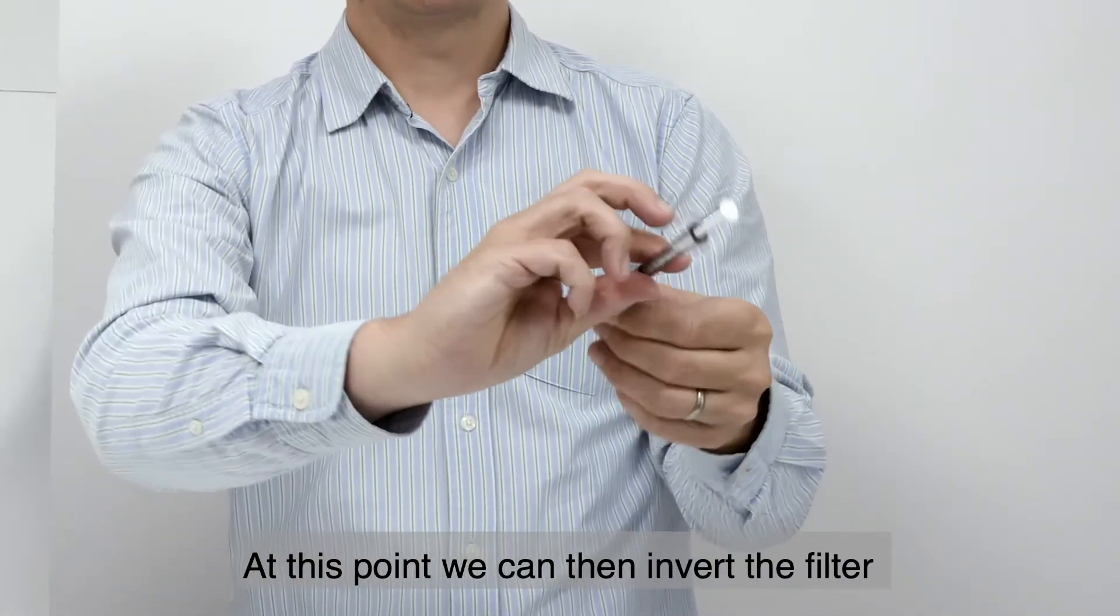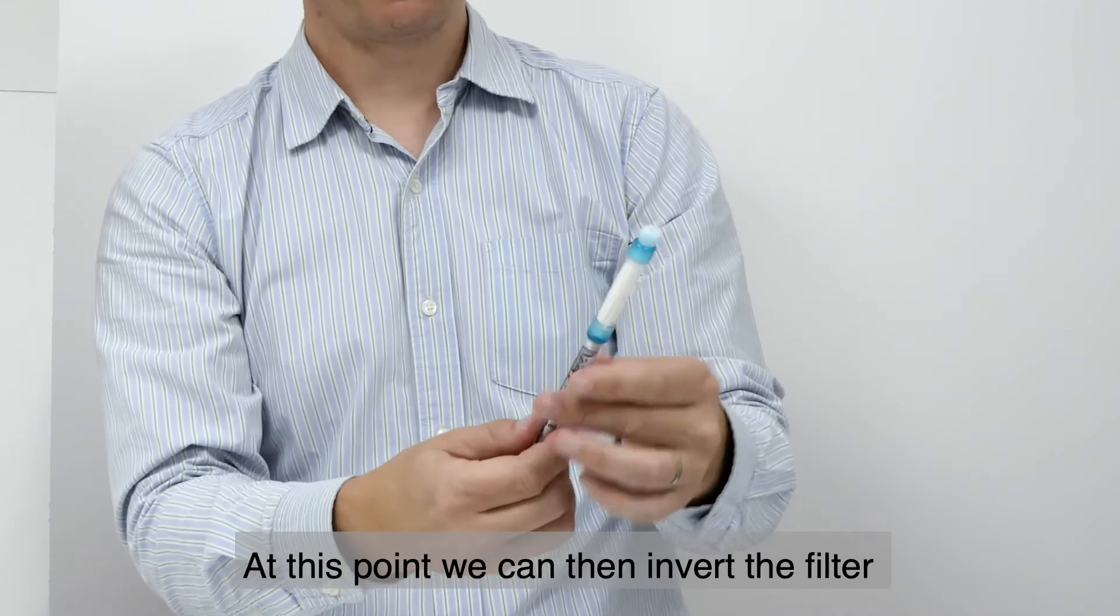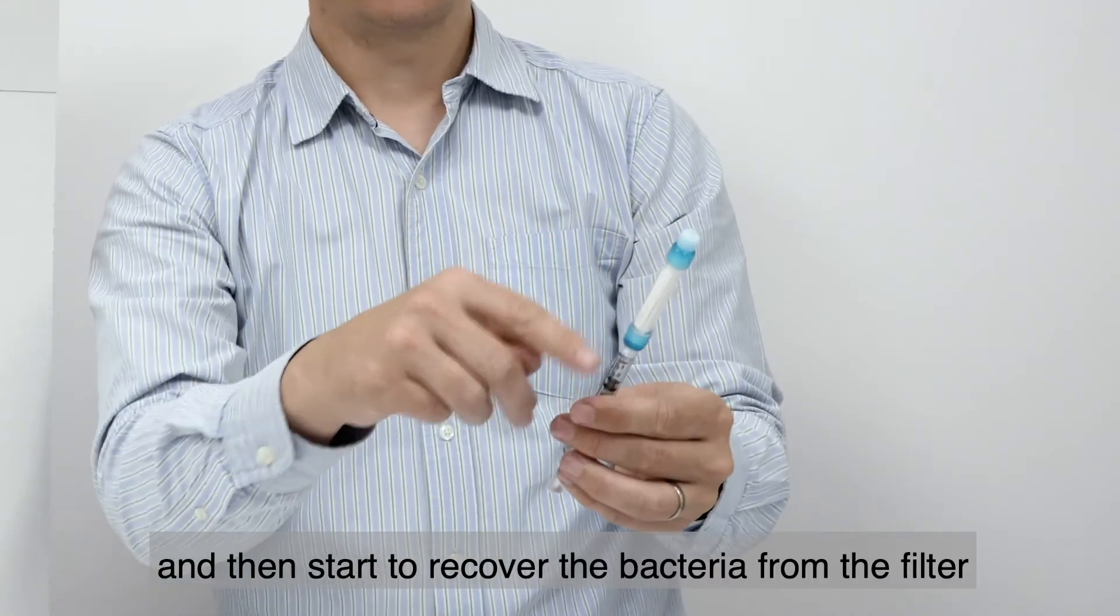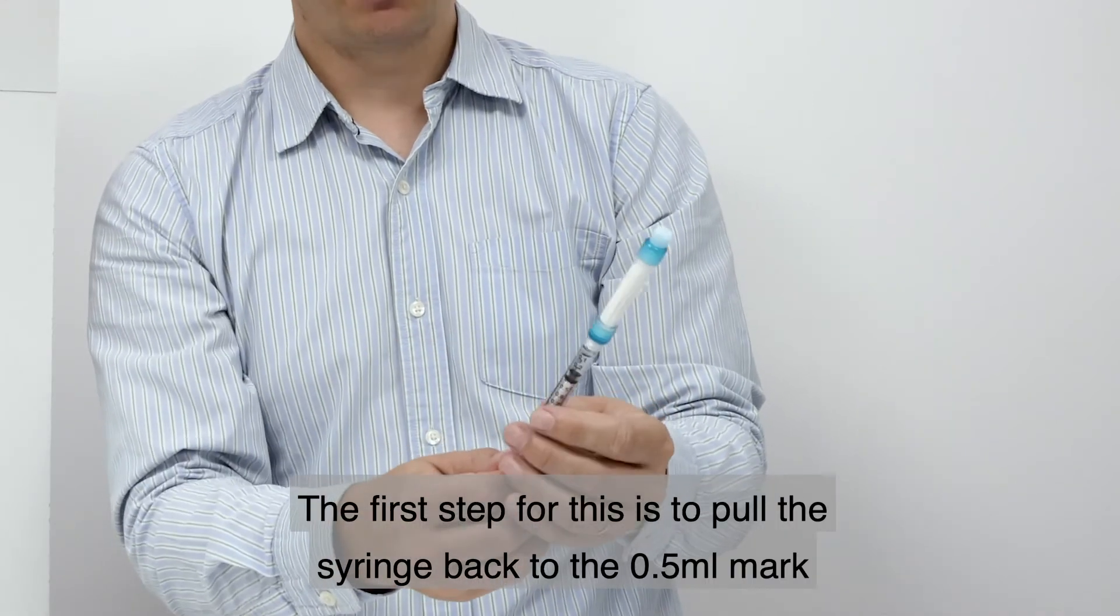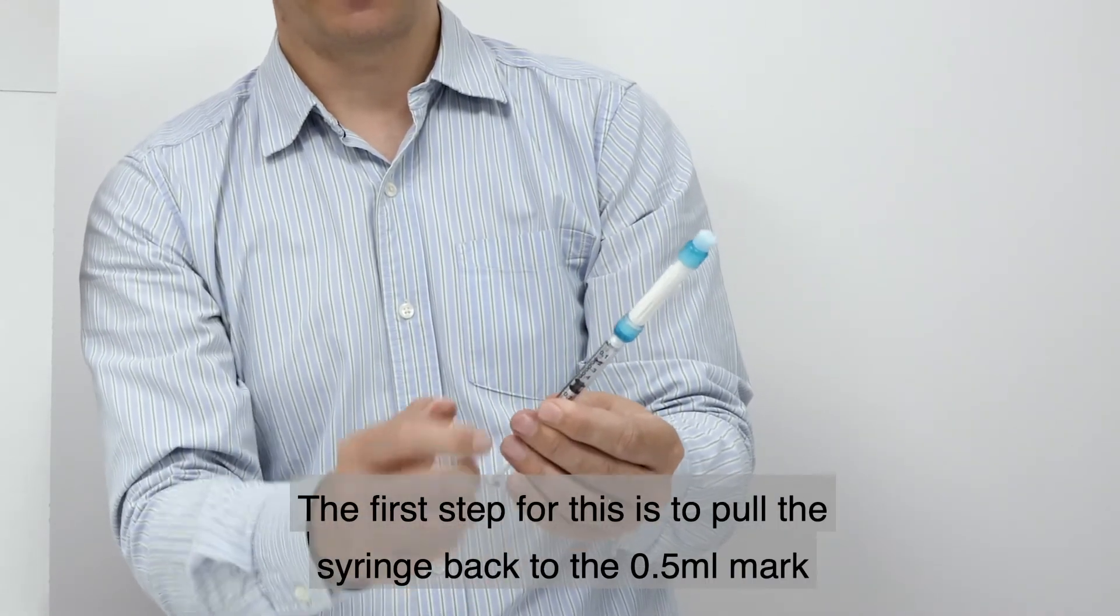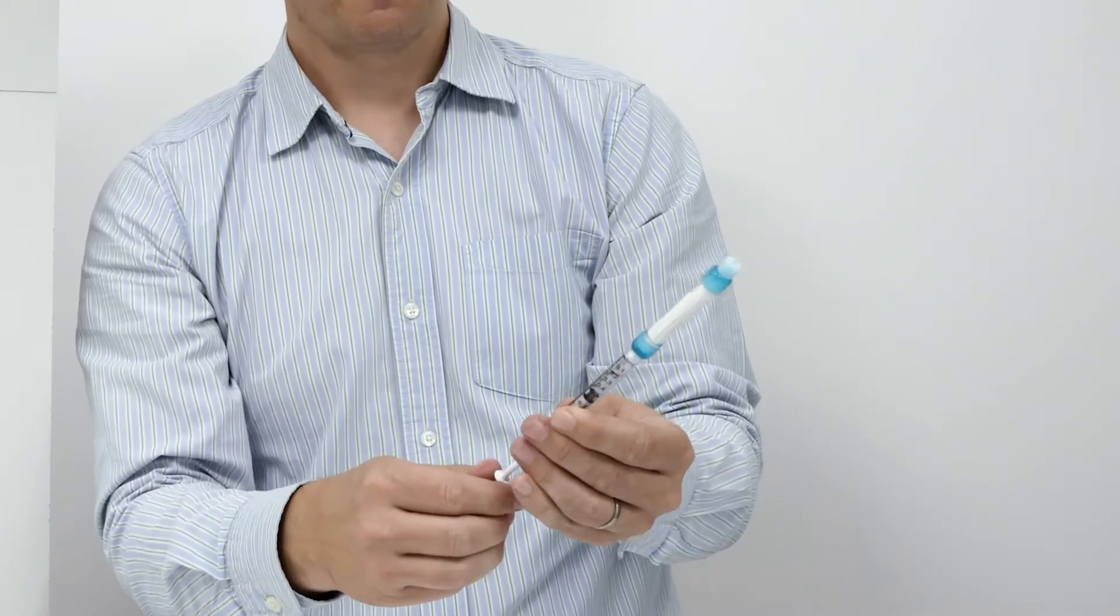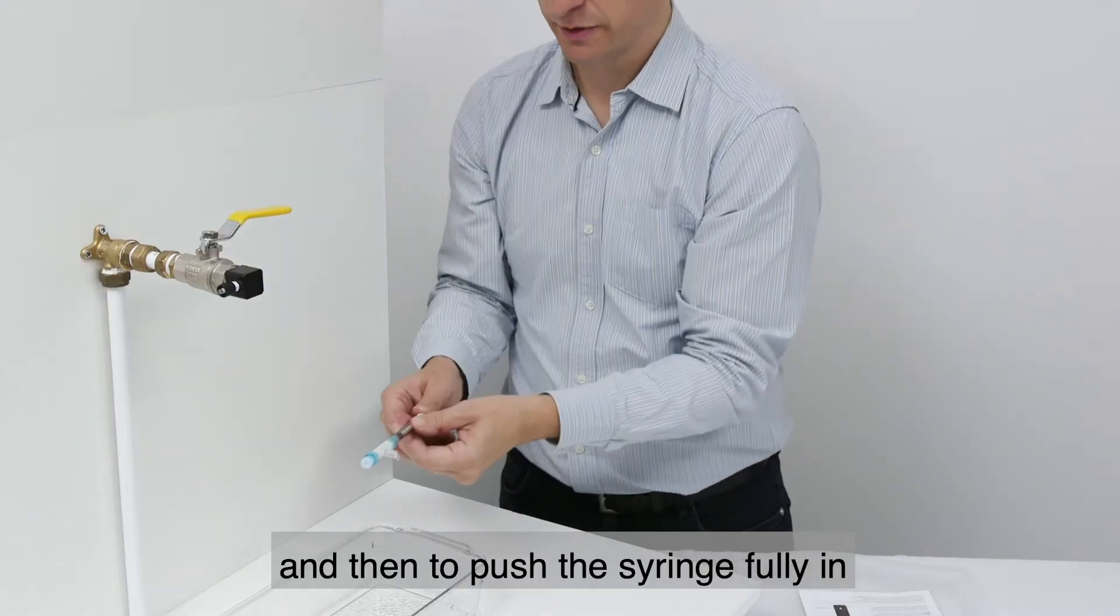At this point we can then invert the filter and then start to recover the bacteria from the filter. The first step for this is to pull the syringe back to the 0.5 milliliter mark and then to push the syringe fully in.